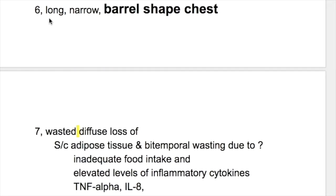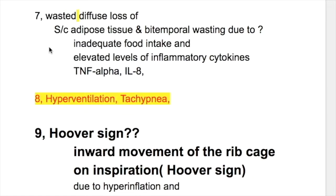Number six, patients have a long narrow barrel-shaped chest. Number seven, patients are wasted with diffuse loss of subcutaneous adipose tissue and bitemporal wasting, due to inadequate food intake and elevated levels of inflammatory cytokines — tumor necrosis factor and interleukin.